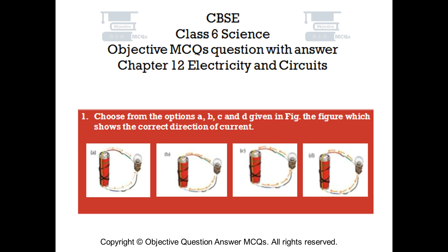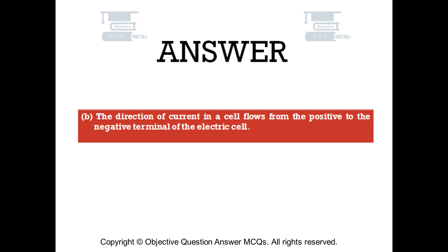Question number 1. Choose from the options A, B, C, and D given in the figure — the figure which shows the correct direction of current. Option A, Option B, Option C, Option D. The right answer is option B. The direction of current in a cell flows from the positive to the negative terminal of the electric cell.